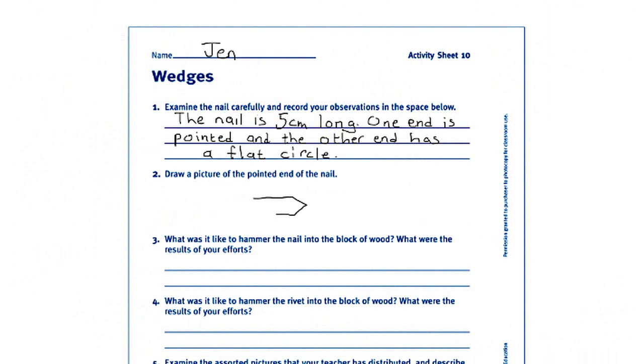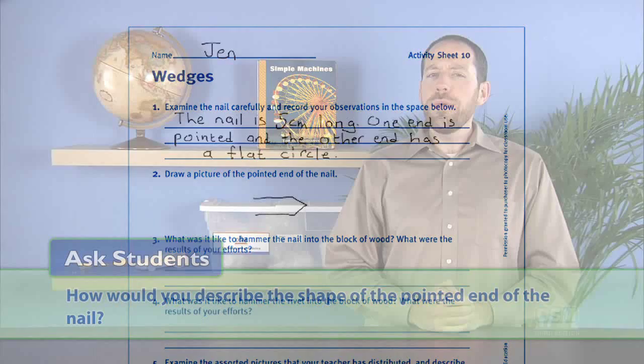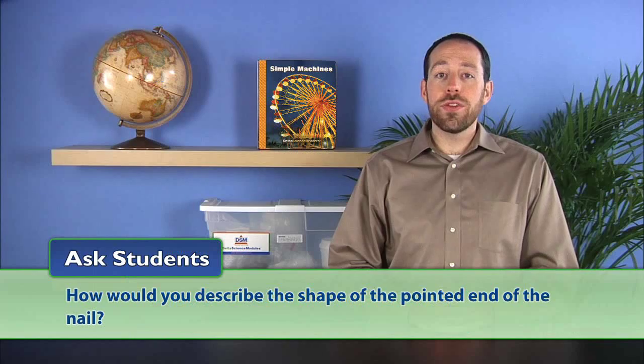Have the students draw on their activity sheets a picture of the pointed end of a nail. Ask students, how would you describe the shape of the pointed end of the nail? The students' descriptions should resemble facts like the point of the nail is v-shaped, slanted, and so on.